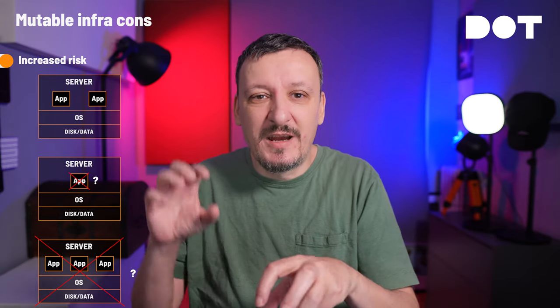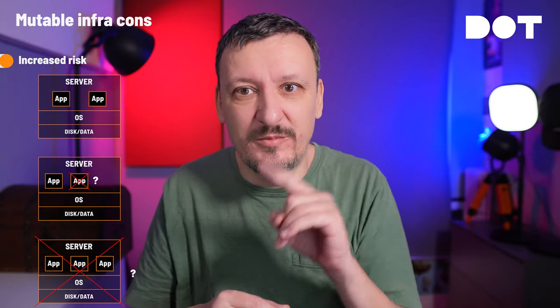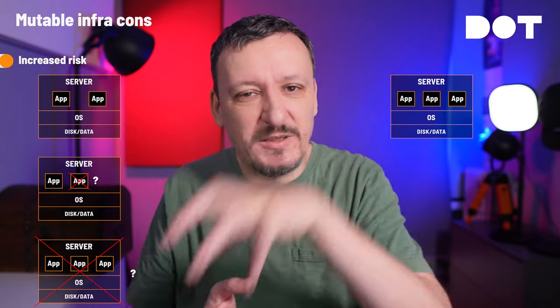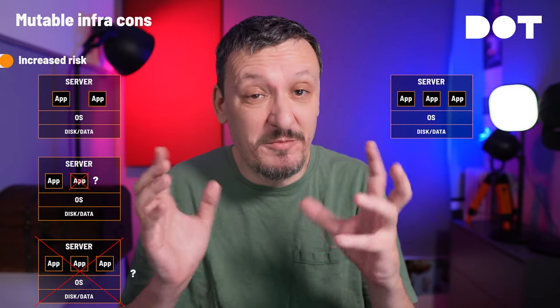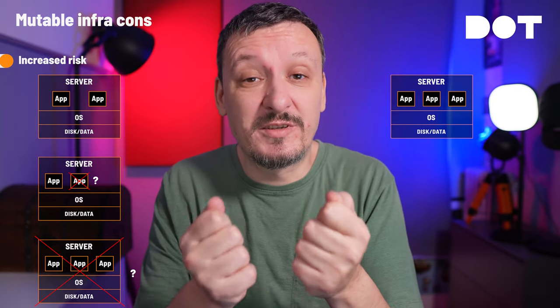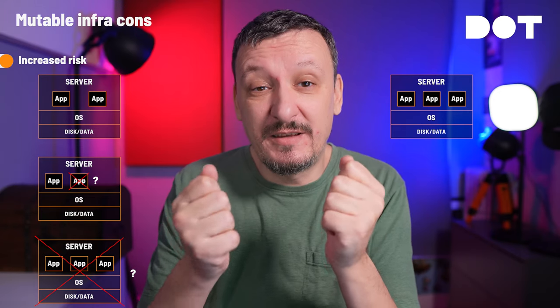That's even worse when the whole server goes down — then we are in real trouble when managing things in a mutable way. How do we create a new instance of the application that is exactly the same as the one that failed? Or even worse, when the whole server goes down, how do we create a completely new server with all the same specifications, same data, same applications, same operating system? Because remember, we are tweaking it all the time, so we are never really 100% sure what we have — which is not necessarily that bad until things go wrong.